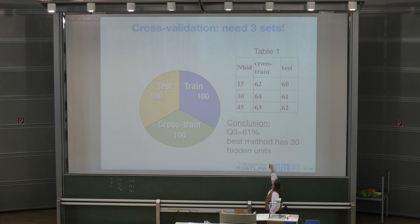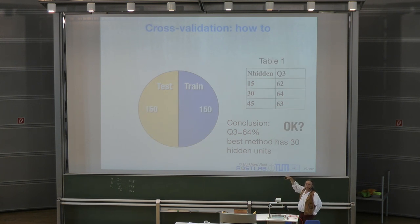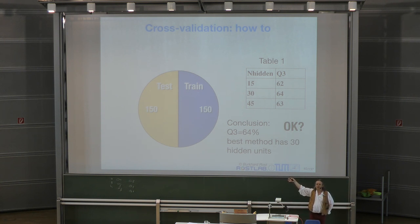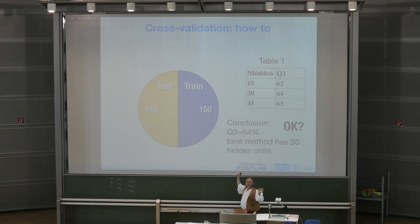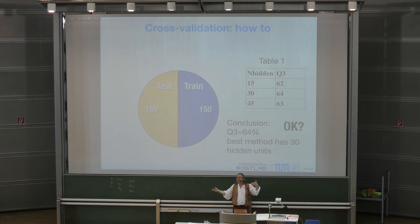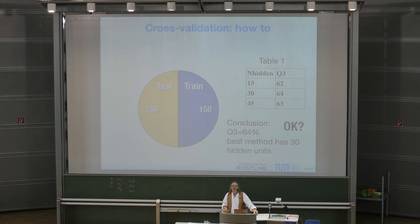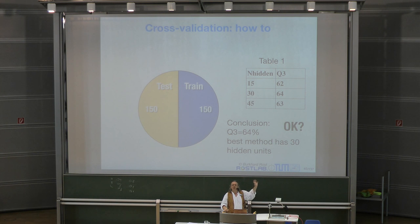The moment you get serious about applying machine learning, the world gets more complicated. You have to make sure you never use the test set for optimizing any decision. In this example, you make a decision on some aspect of your model — hidden units — based on test data. This could be comparing SVM versus neural networks, different basis functions, or different types of input. Any of these decisions cannot be made on the test set.